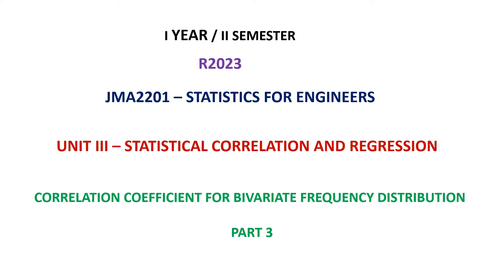Welcome back dear students. Hope all of you have successfully completed the practice problems from the previous videos and understood the basic concept of how to find the correlation coefficient when data is explicitly given, using the three methods: the direct method, actual mean method, and assumed mean method. We also covered how to find the corrected correlation coefficient when there are errors in the given results.